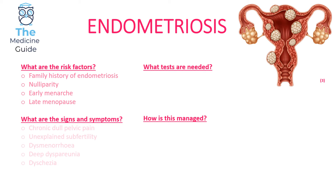The signs of endometriosis involve chronic dull pelvic pain, unexplained subfertility, dysmenorrhea — which is pain before the period has even begun — deep dyspareunia, which is painful intercourse, and dyschezia, which is painful bowel movement.